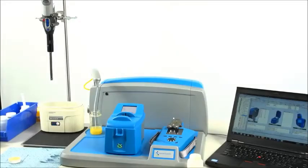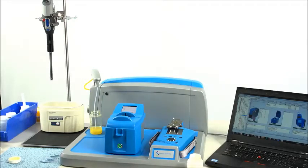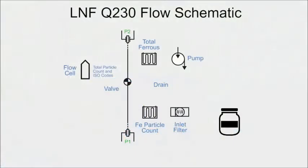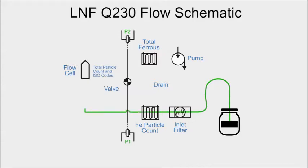After the ultrasonic, which removes the air bubbles, we process the sample on a particle counter and ferris monitor. This test measures particle count and ferris wire. The LNF Q230 schematic shows the flow path. The sample is drawn up through the tube, through a 100 micron filter that removes large particulates, and enters the ferris portion—a high-sensitivity magnetometer which measures the ferris particle count. Next, the sample enters the LNF flow cell, which uses laser light and a CCD detector to image each individual particle.